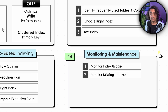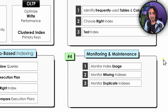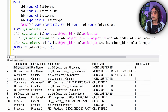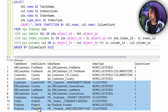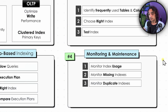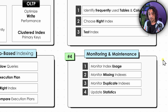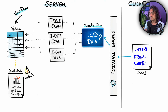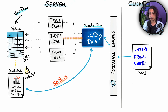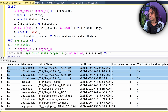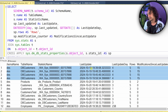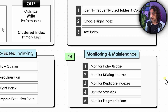Next, monitor for missing indexes — check recommendations from the database where it reports missing indexes from the execution plan, using dynamic management views for more detail. Also monitor for duplicate indexes, which happens when multiple developers work in parallel to optimize slow queries and create multiple indexes on the same column. If duplicates are found, consolidate them. Then update statistics regularly — statistics are critical for the execution plan, and outdated statistics lead to bad decisions. My recommendation: set up a weekly job to rebuild all database statistics.